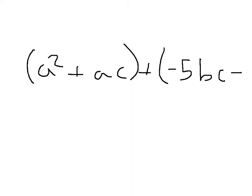So after grouping, you get a squared plus ac plus, you have to keep the plus sign in between the two, so it's not a multiplication right away. Negative 5bc minus 5ab.